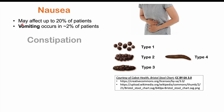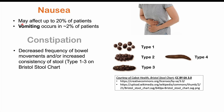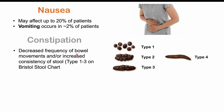Constipation can also be another finding. Constipation is a decreased frequency of bowel movements, or an increased consistency of stool — type one to three on the Bristol stool chart, where type four is the normal stool type. This affects roughly five to ten percent of patients.